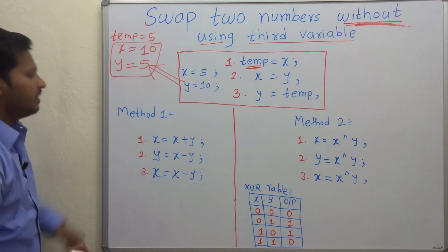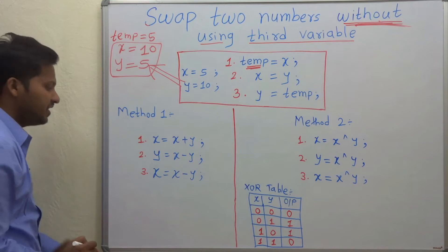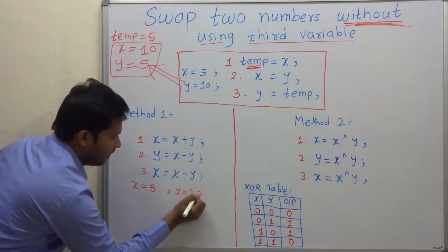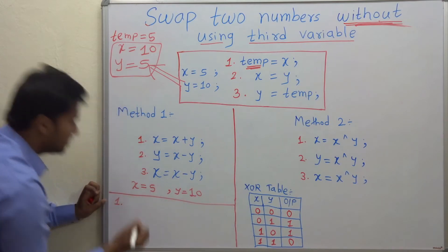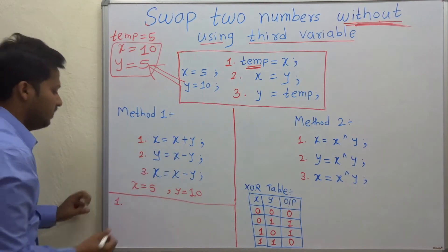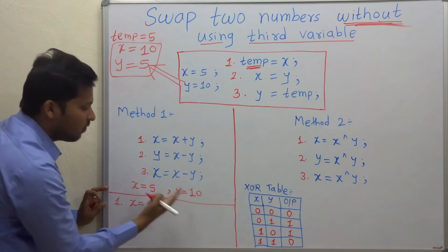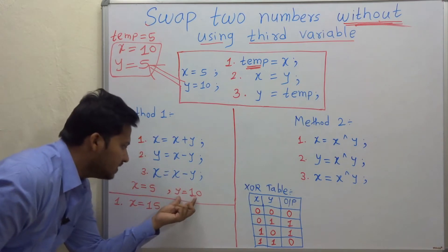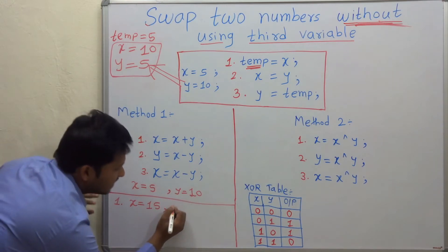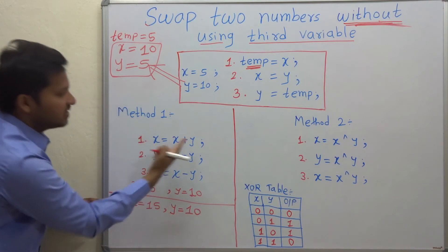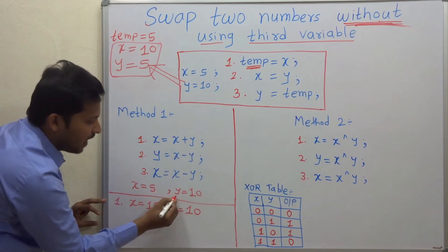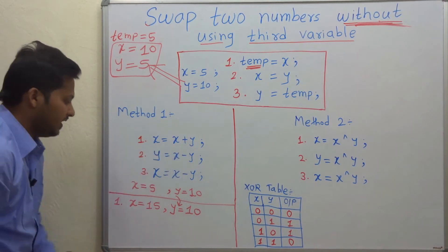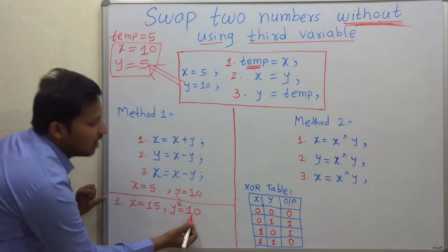Let's execute these three statements and see how they swap the values of the two variables. At first, the value of x is 5 and the value of y is 10. Let's execute the first statement: x is equal to x plus y, that means x will become 5 plus 10, that is 15. The value of y at this stage is unchanged — there is no statement which affects y, so y remains 10.